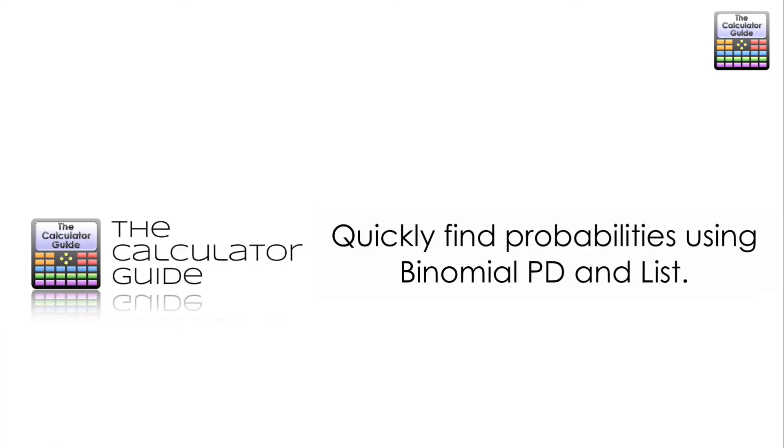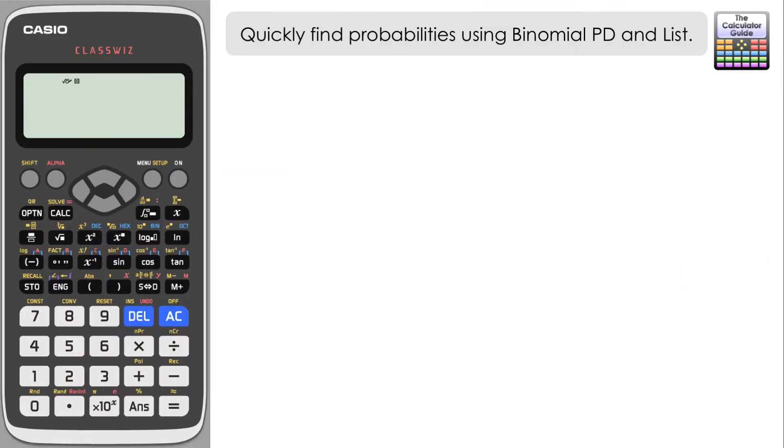Hello and welcome to the calculator guide video on how to quickly find probabilities using binomial PD and list. We're going to answer this question in this video. The random variable x is distributed binomially with an n of 6 and a p of 0.3.